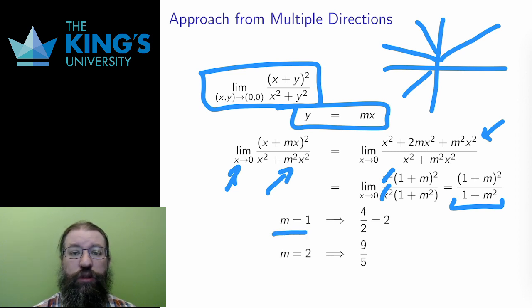If m = 1, then this evaluates to 2, but if m = 2, then this evaluates to 6/5. This means that the limit depends on the line of approach. And since there are different values for the limit depending on how you approach it, it is impossible for this limit to exist.